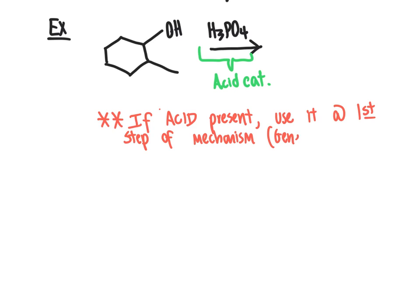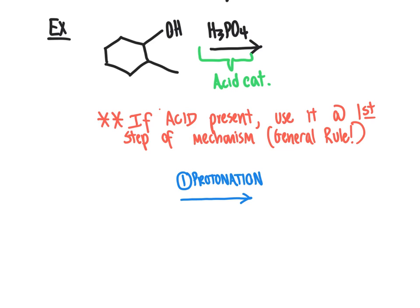This is a general rule: when looking at a reaction, if there's an acid present, acid-base reactions are very quick, so you expect protonation of the organic reactant to happen first. So the first step of this mechanism is protonation — the organic reactant picks up a proton. It's going to gain a proton during this step of the reaction.